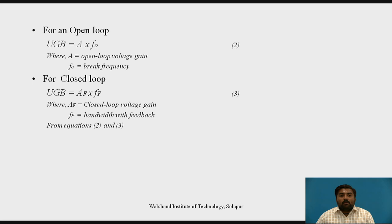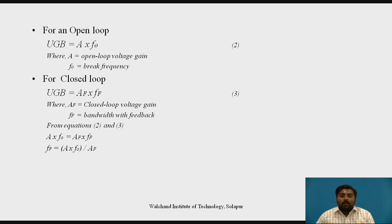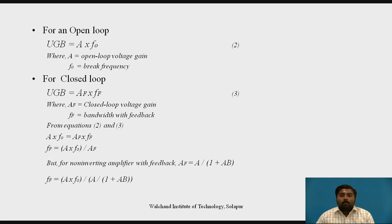For the open loop op-amp, UGB equals A into FO, where A is the open loop voltage gain and FO is the break frequency. For the closed loop op-amp, UGB equals AF into FF, where AF is the closed loop voltage gain and FF is the bandwidth with feedback. Setting these equal gives FF equals A into FO divided by AF. For the non-inverting amplifier with feedback, AF equals A divided by 1 plus A·beta, so the final equation for FF equals F0 into 1 plus A·beta.